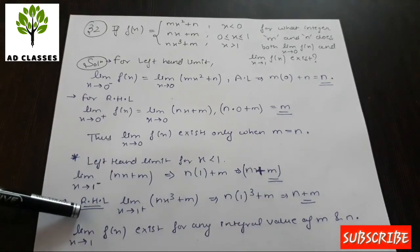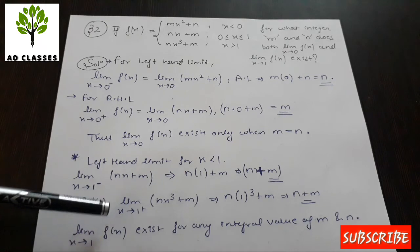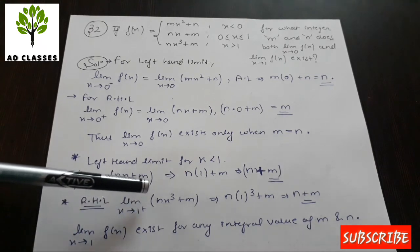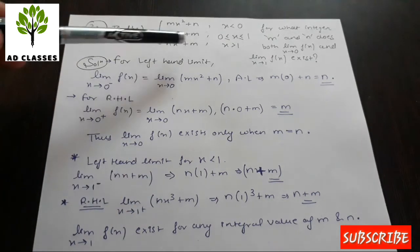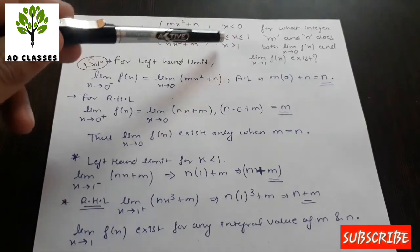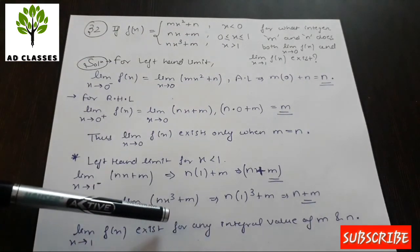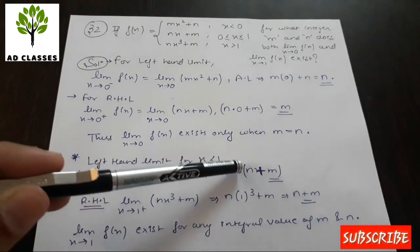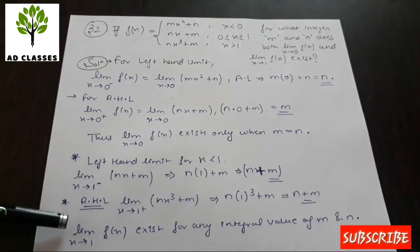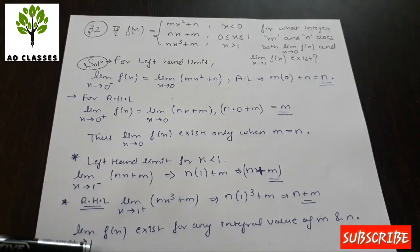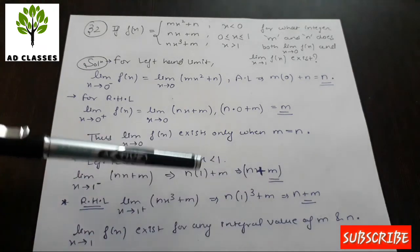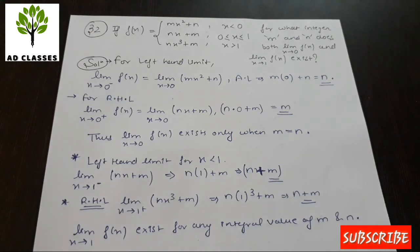For the Right Hand Limit at x = 1, we use the third piece since x > 1 there. Applying the limit as x tends to 1 from the right also gives n + m. Since LHL = RHL = n + m, the limit as x tends to 1 exists for any integral value of m and n.